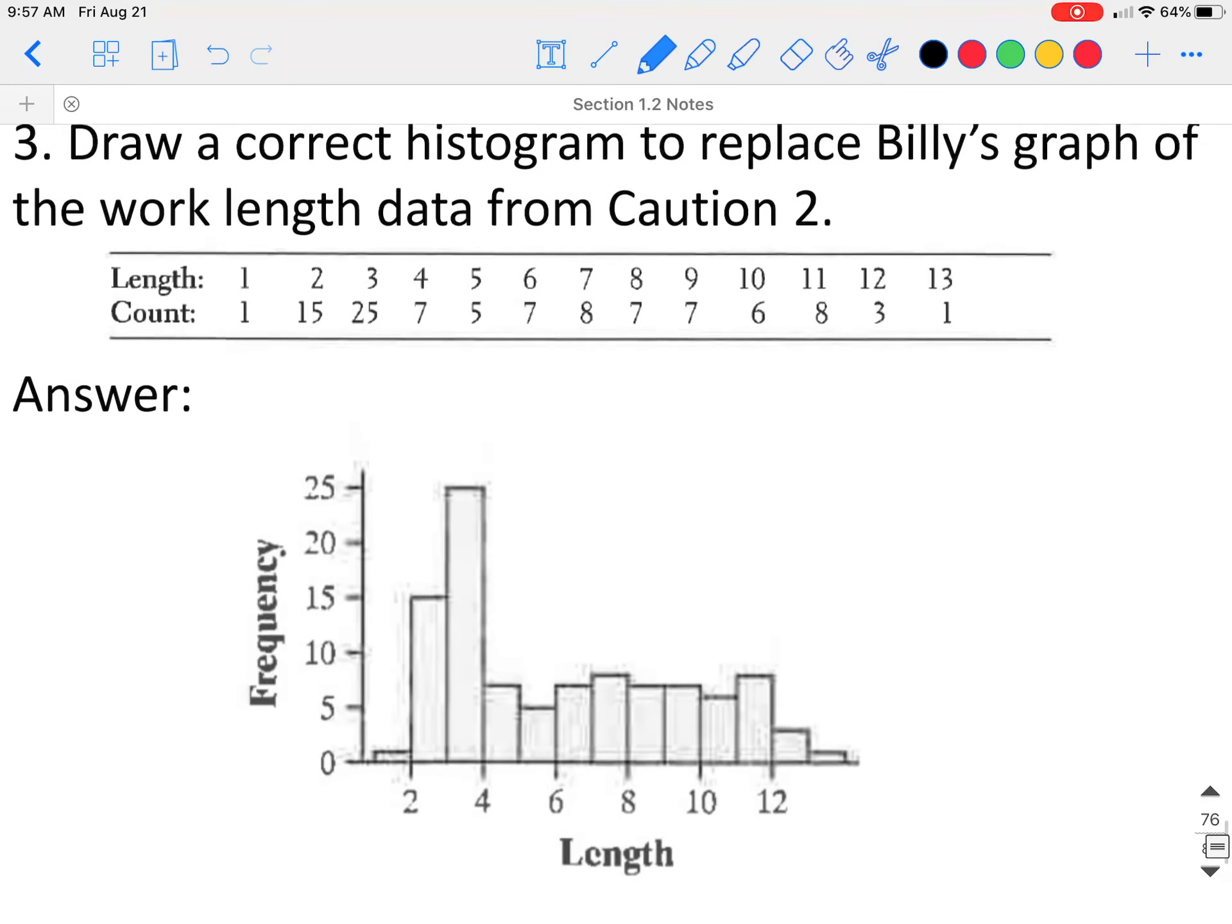If we make this histogram, if we look from 1 to 2, there is only one word. From 2 to 3, there are 15 words. From 3 to 4, there are 25 words. So again, you can make your class widths different. It does not make it wrong. You just have to decide which class width you want to go with.